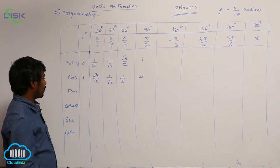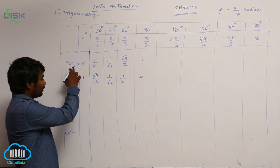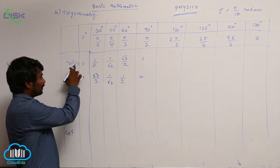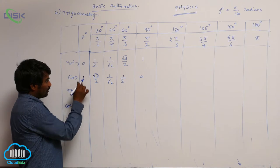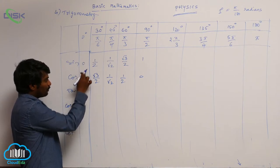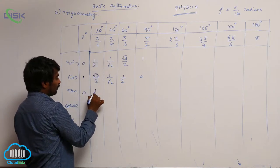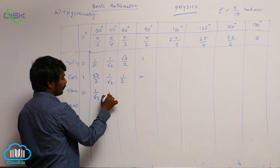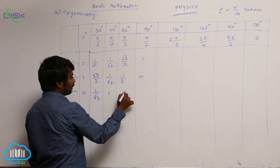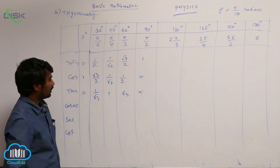For tan values, tan equals sin by cos. So tan 0 is sin 0 by cos 0, that is 0 by 1 equal to 0. Then 1 by root 3, then 1, then root 3. At 90 degrees it is undefined, or generally we write infinity.